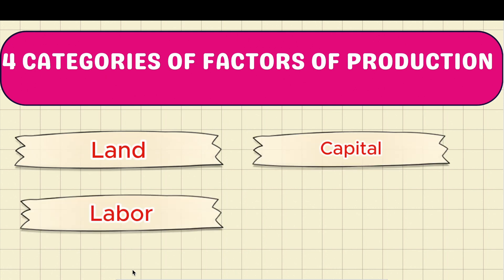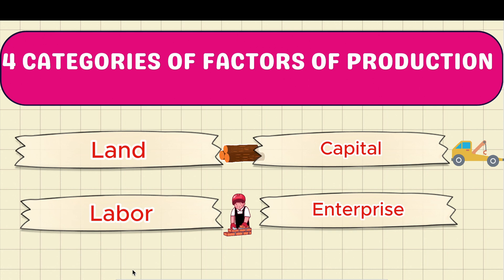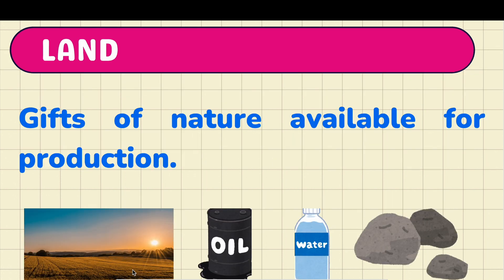In the case of house construction, machinery can be categorized under capital, workers go to labor, and materials go to land. Today we will focus on land and capital.